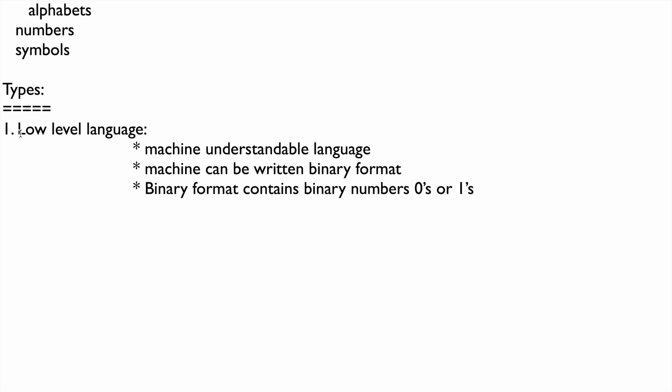A user cannot understand low-level language; only a computer can understand it. An example of low-level language is ADA, which is a low-level language. The second type of language is high-level language.